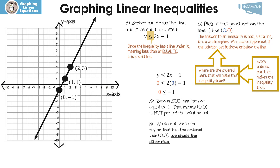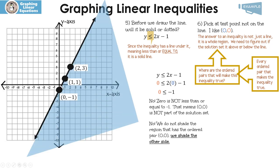We shade the other side. Since 0, 0 is not a solution, I can't shade that region, which tells me that every point on the other side is a solution to our inequality. And of course, we shade that region — which is the fun part.